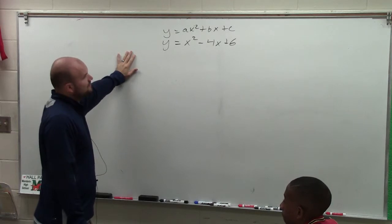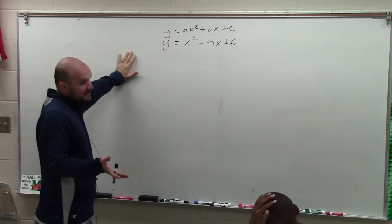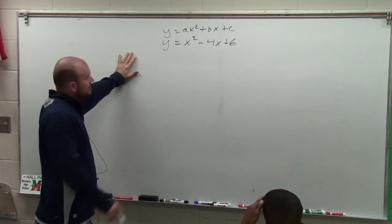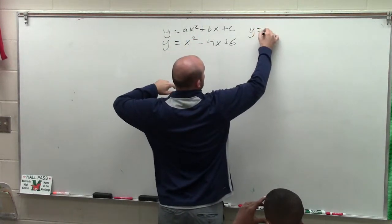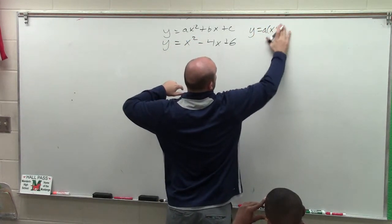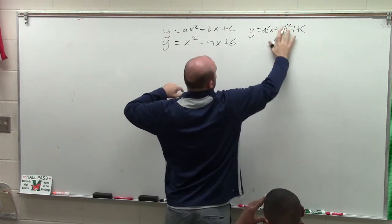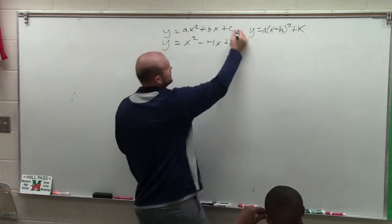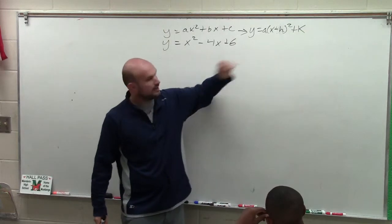However, sometimes for not only finding the zeros, but for finding the vertex, obviously finding the vertex when it's in vertex form is much simpler, correct? So one of the processes we can do is we can convert it from standard form to vertex form, y equals (x minus h)² minus k. So that's basically the process that we're going to be doing, converting it from standard form to vertex form.